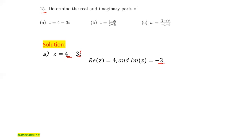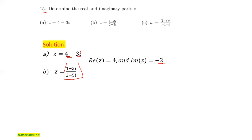Second, that is part B, which is given in the form of (1 minus 3i) over (2 minus 5i). In order to determine the real and imaginary parts of this quotient of two complex numbers, we have to change this into the general form x plus iy. To do this, we multiply both the numerator and denominator by the complex conjugate of the denominator, which is 2 plus 5i.